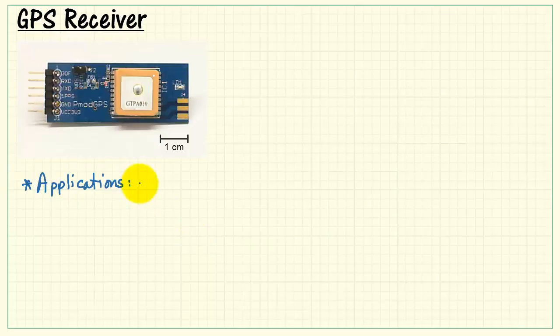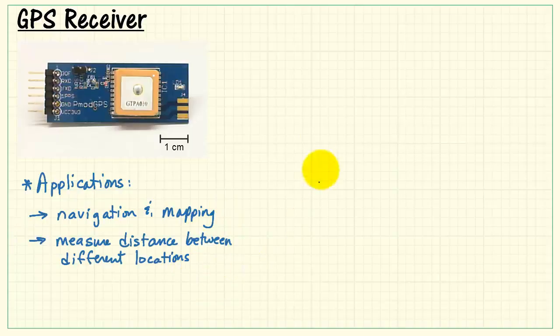Of course, GPS receivers are very common now. You can find them in all sorts of mobile devices. Applications include navigation and mapping, and also measuring the distance between different locations on the planet.